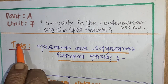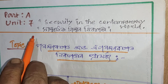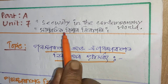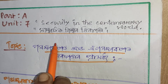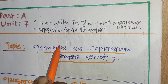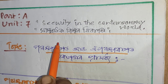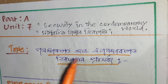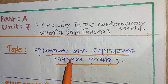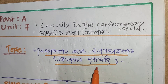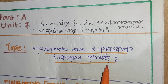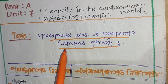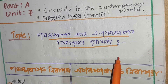Dear students, I am J2 Part A, Unit No. 7, Security in the Contemporary World. I am going to talk about the difference between traditional security and non-traditional security.